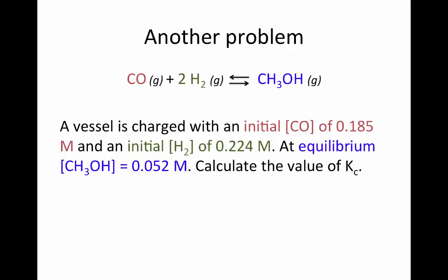To get a little more practice, let's do one more problem. Here we're looking at a reaction in the gaseous phase: gaseous carbon monoxide combining with two moles of hydrogen gas to form methanol gas. You take a reaction vessel and put in enough carbon monoxide to make a 0.185 molar concentration, and add hydrogen gas until you reach a concentration of 0.224 molar. At equilibrium, the concentration of methanol gas is 0.052 molar, and we want to calculate the equilibrium constant.